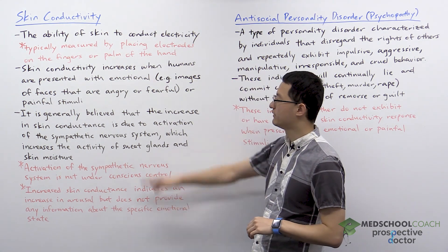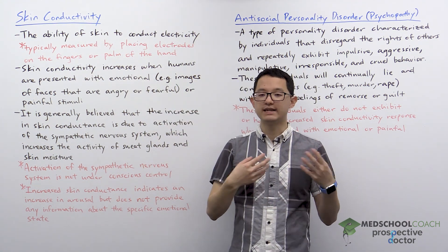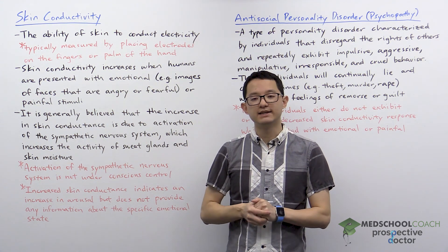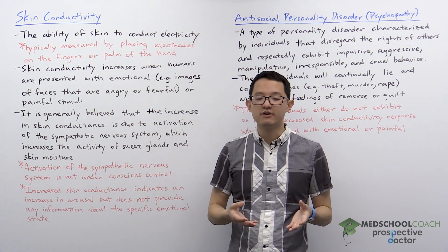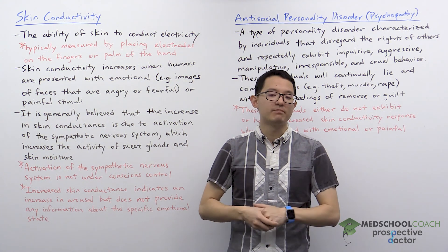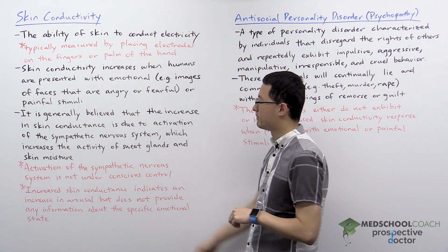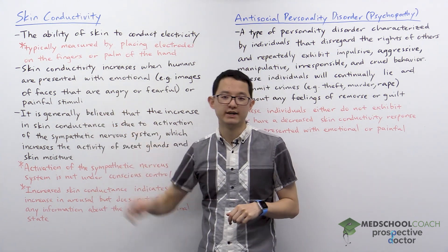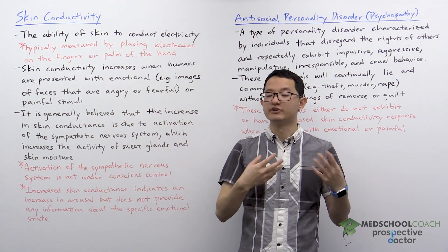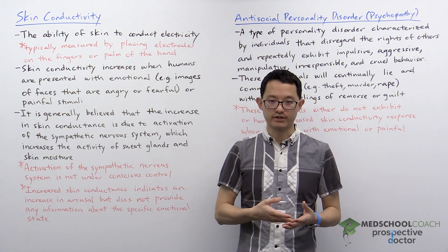An example of an emotional stimulus is faces expressing anger or fear. So if you present a person with an angry face or a fearful face, that person's skin conductivity will increase. An example of a painful stimulus is a pin prick — if you poke someone with a pin, that will produce pain and that person's skin conductivity will also increase.